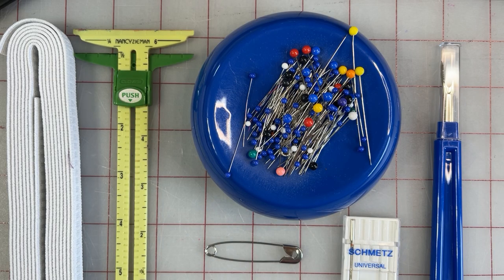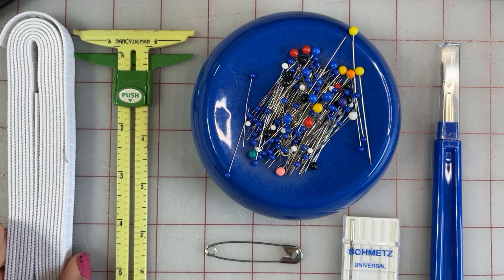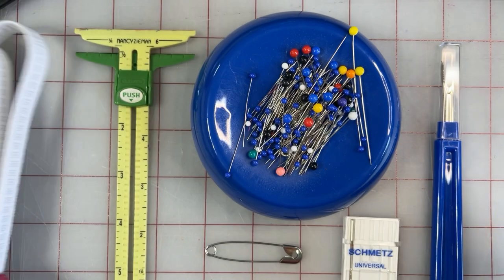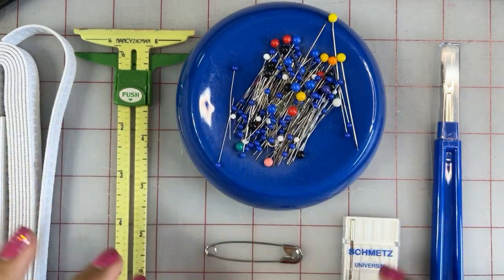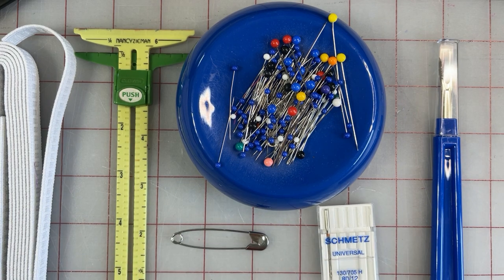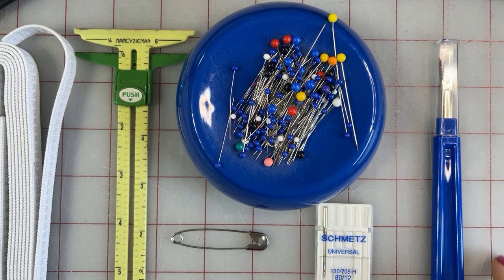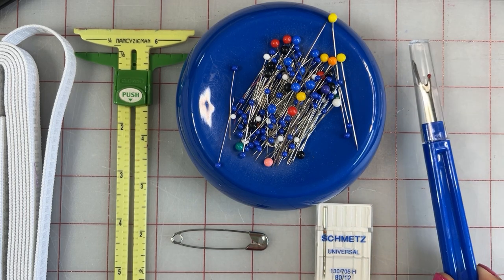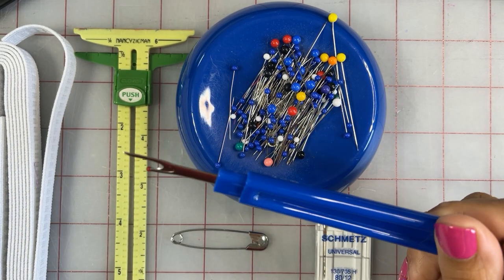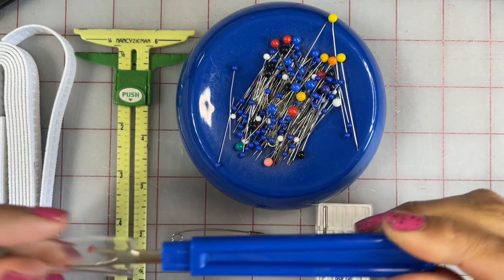For your supplies, we're going to try to keep this really simple. You're going to need elastic. I'm using this half inch non-roll elastic. You're going to need a seam gauge, pins, a safety pin, and a machine needle. I'm using this universal 80/12. And you're also going to need a seam ripper. We hope that we don't have to use it, but let's be realistic and assume that we might have to.